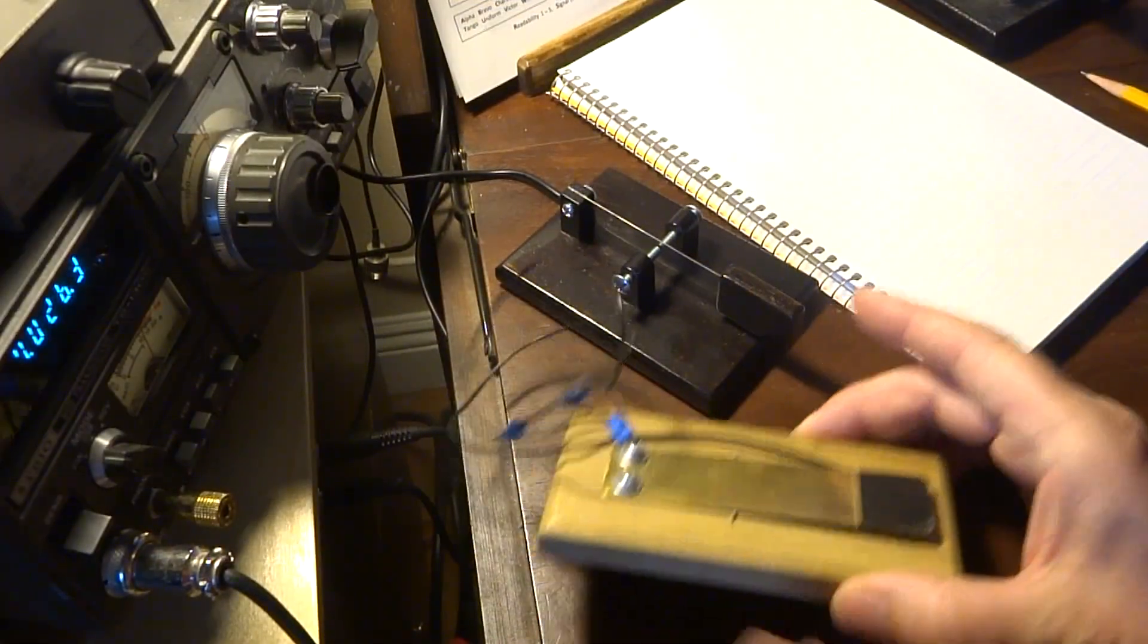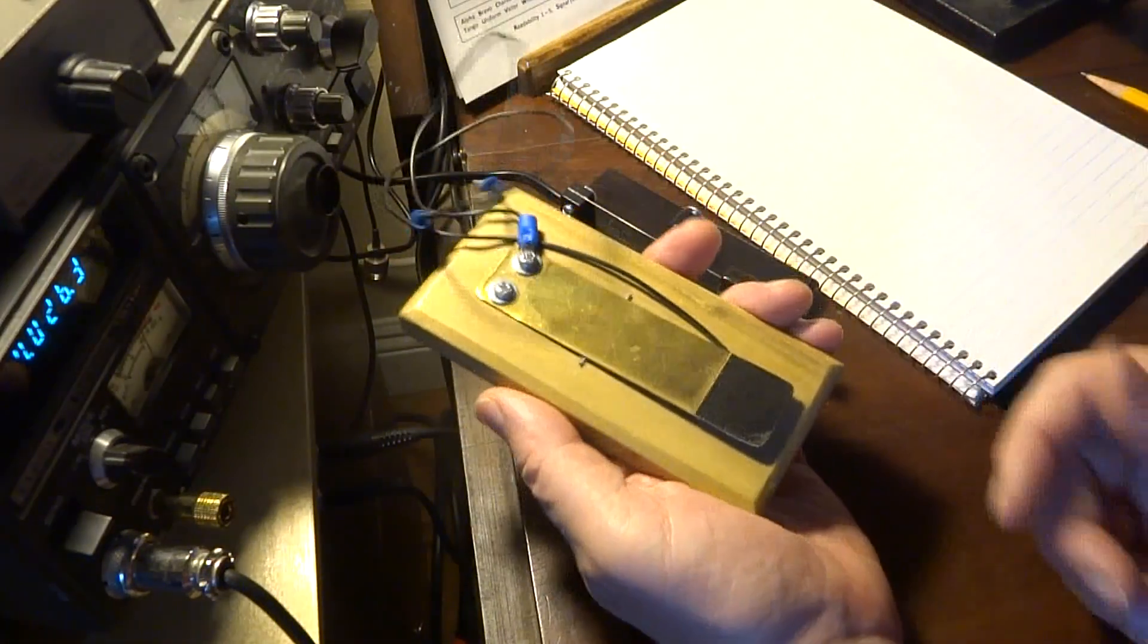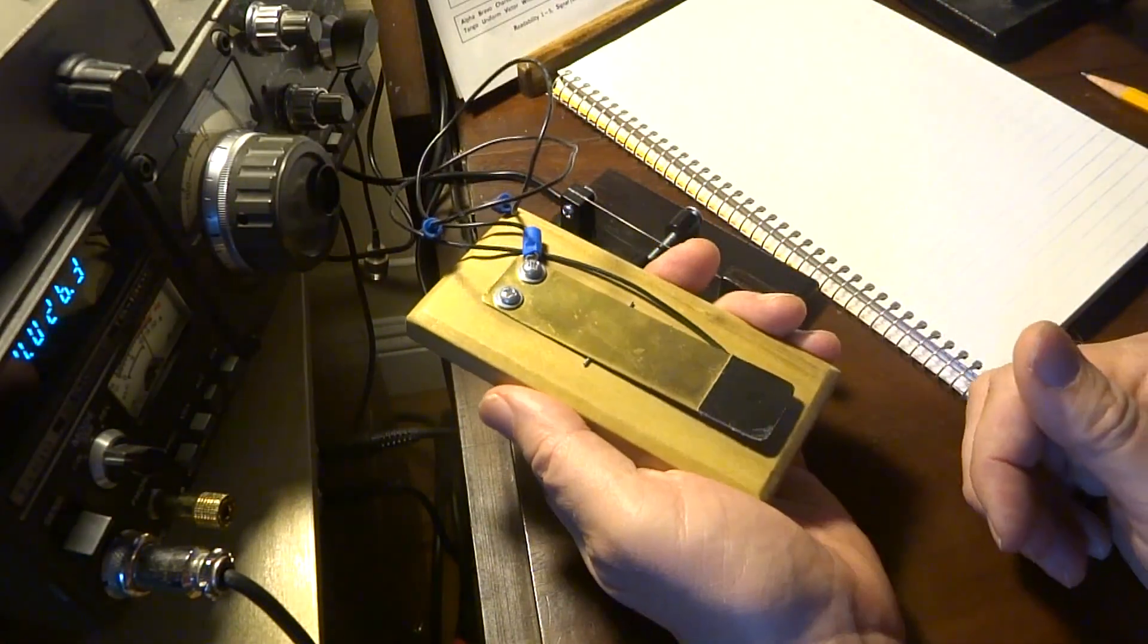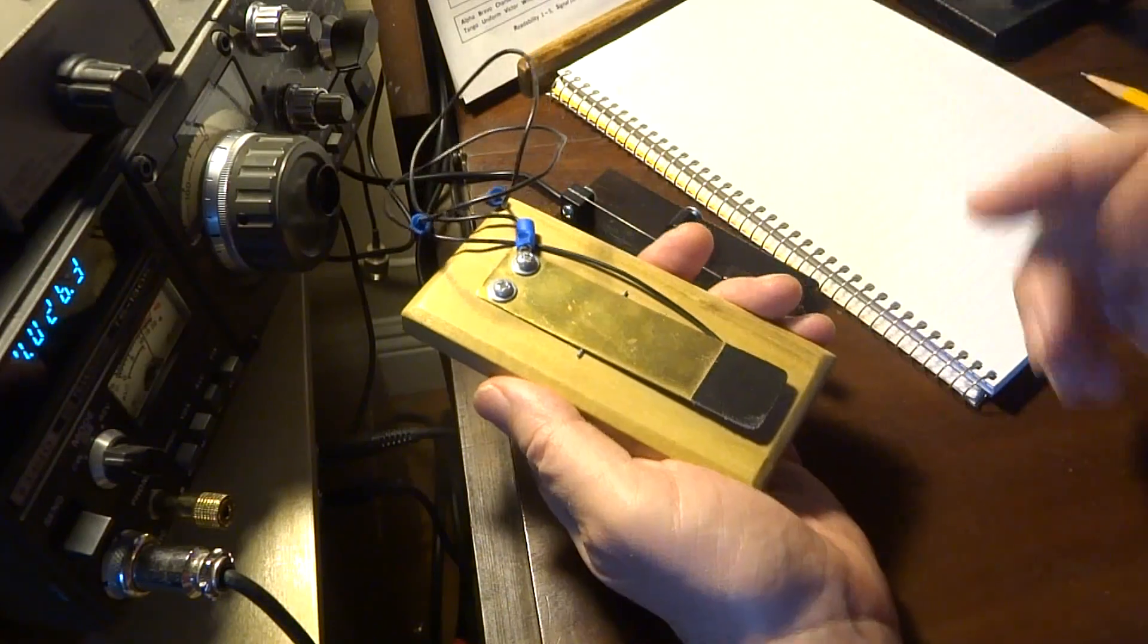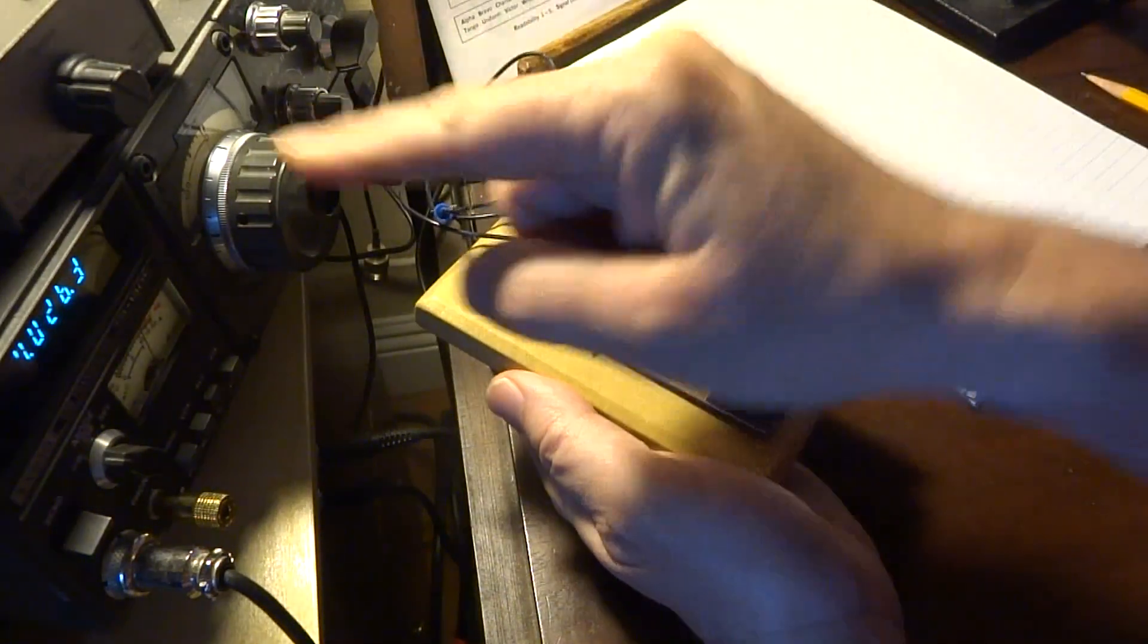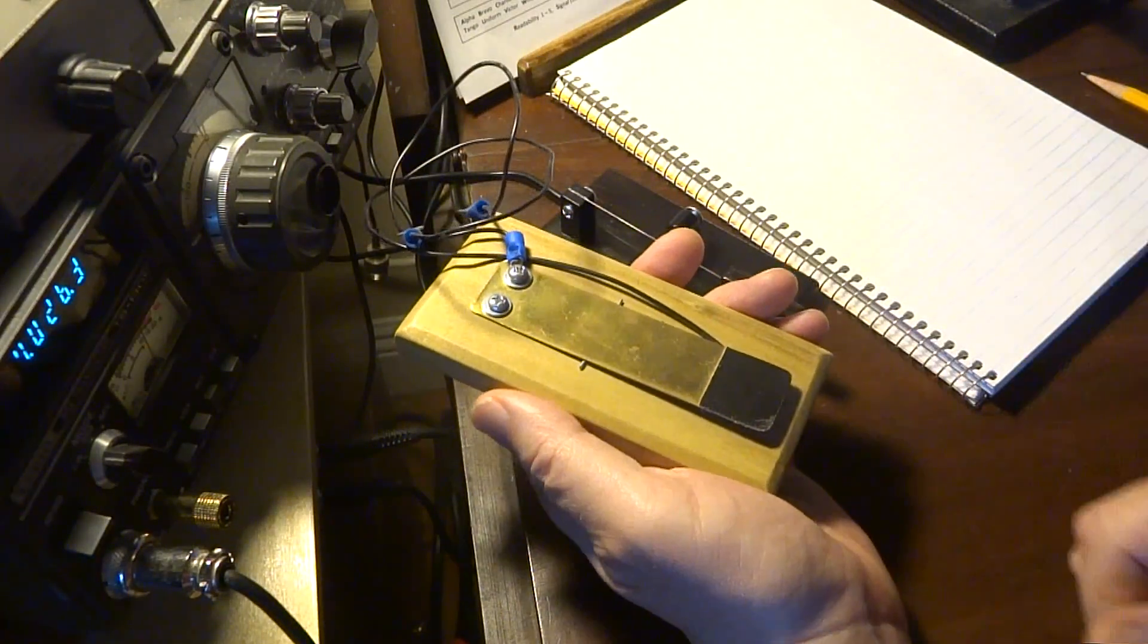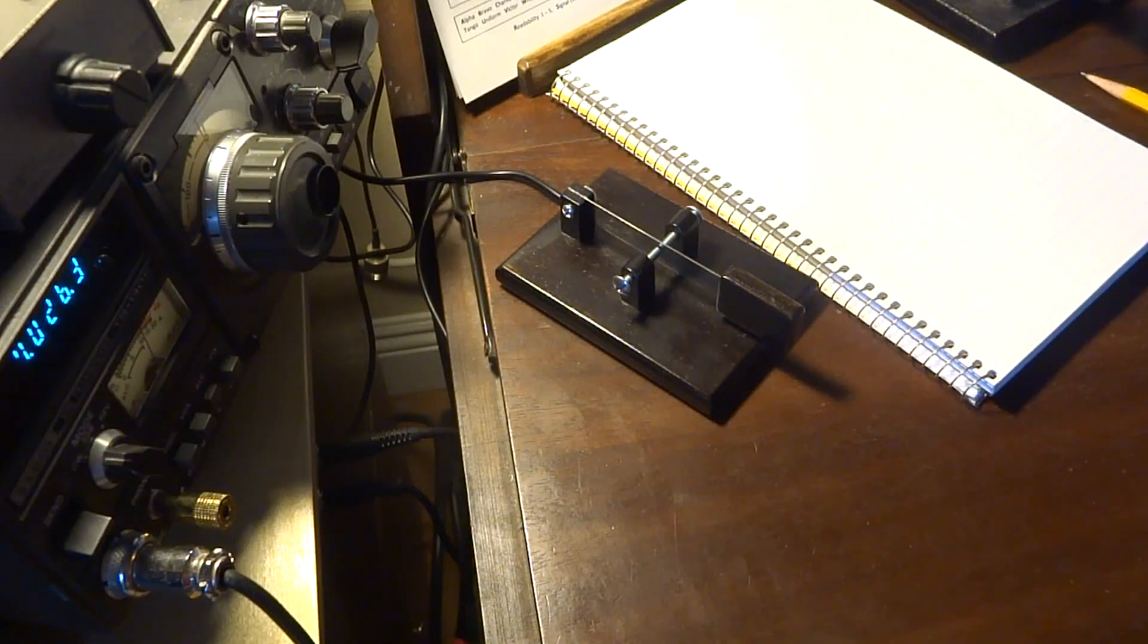As I said before, a Morse key is simply a switch. So here you can see a simple one that I just made out of a piece of brass. It's basically connecting two wires and when you hold the switch down, it's keying the radio to alternate the carrier signal as it sends it out.